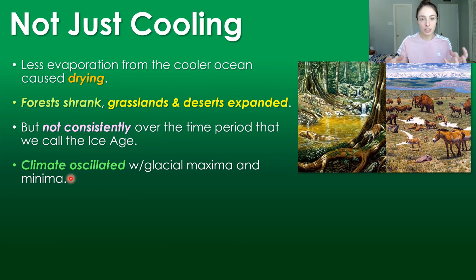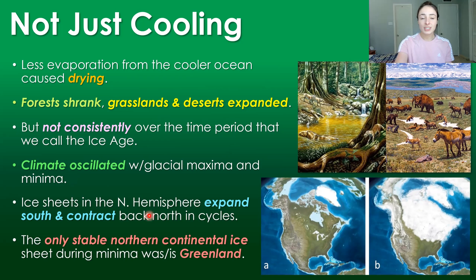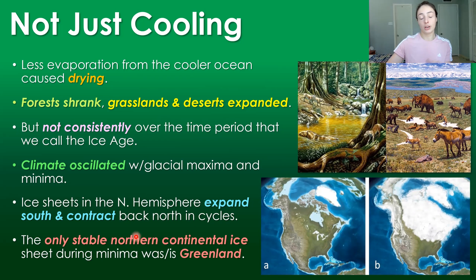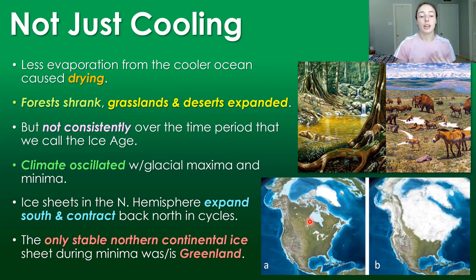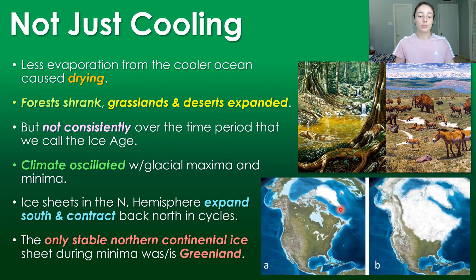Instead, as we saw, climate oscillated quite a bit with glacial maxima and minima, especially in the last roughly 3 million years when those interglacial cycles began to become really consistent. During these interglacial cycles, the northern hemisphere undergoes expansion and contraction of ice. The only stable northern continental ice mass is Greenland during the minima,